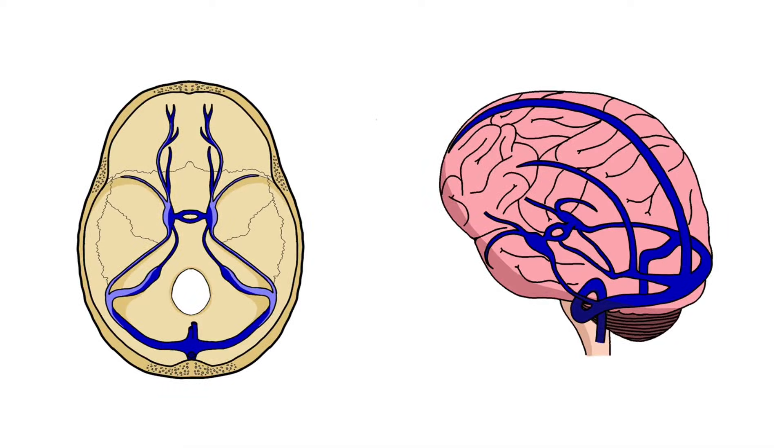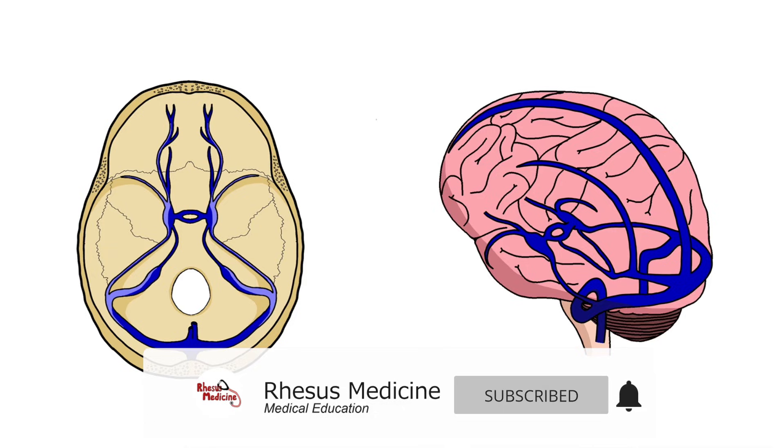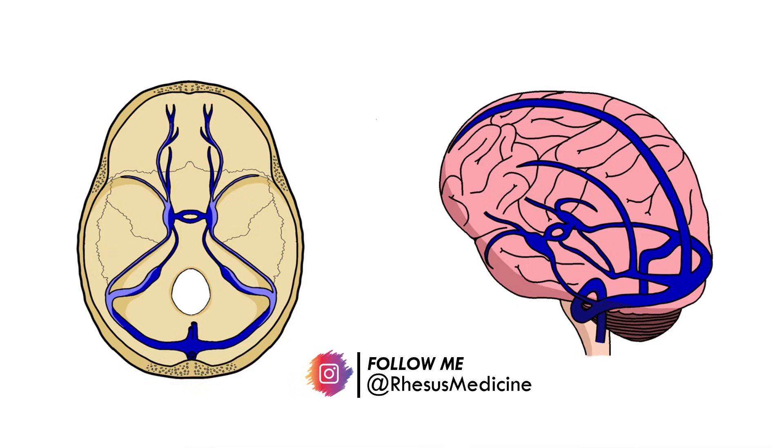Cerebral venous sinus thrombosis is the formation of a clot within the dural venous sinuses, which are involved in draining blood from the brain.